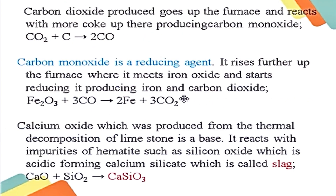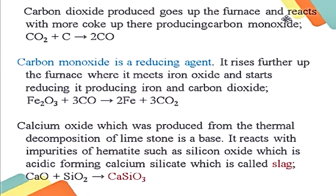Calcium oxide, produced from the thermal decomposition of limestone, is a base. It reacts with the impurity in hematite, which is silicon dioxide (an acidic oxide), forming calcium silicate, which is the slag. CaO + SiO2 → calcium silicate.